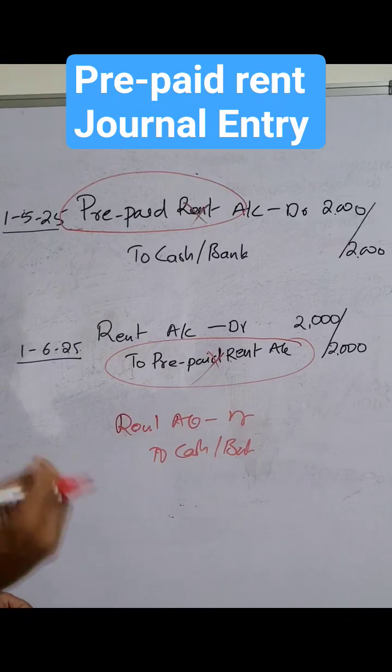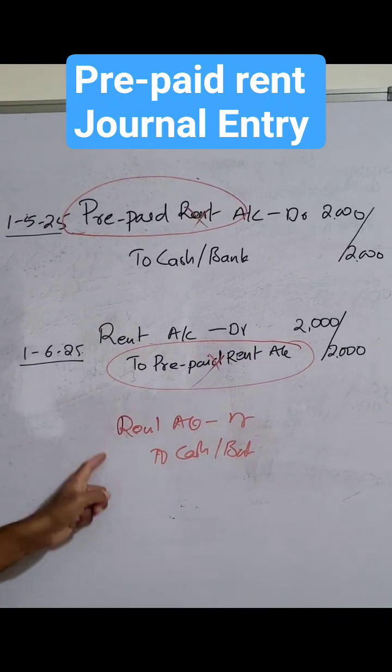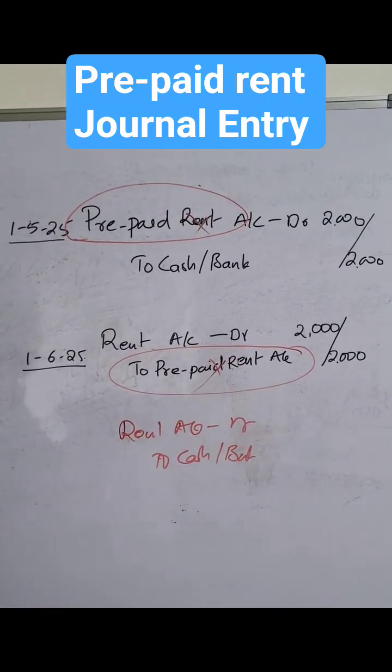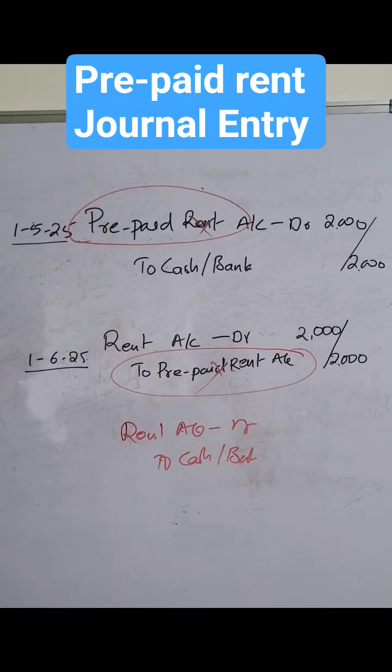So generally, when we have paid the rent, we write the entry as: Rent Account debit to Cash or Bank. This is the entry that will remain.